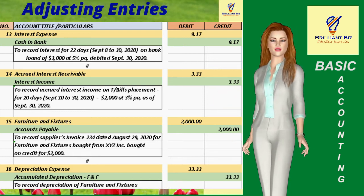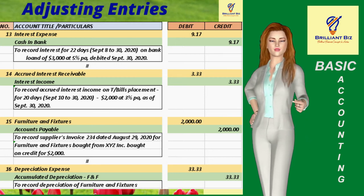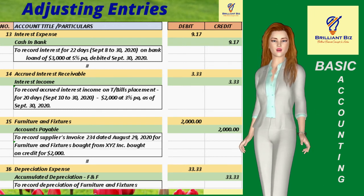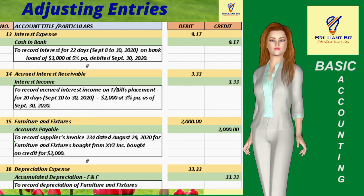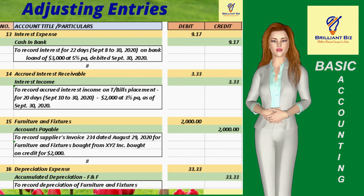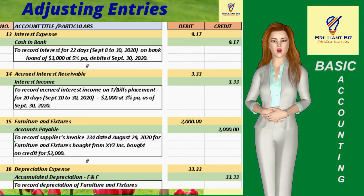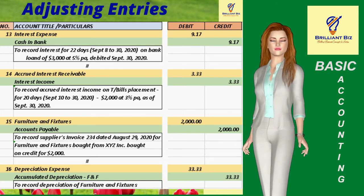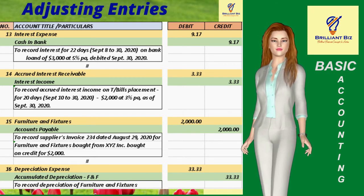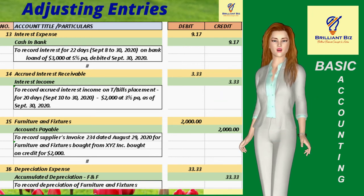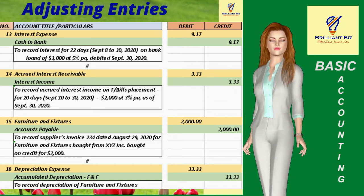Number 12 to record September 30 partial payment of $2,000 bank loan; number 13 to record $9.17 interest on $3,000 bank loan; number 14 to record September 30 deposit of $5,000 by Ms. Smith; number 15 to record XYZ Inc.'s invoice number 234 for furniture and fixtures worth $2,000 bought on credit on August 29, 2020; number 16 to record $33.33 depreciation expense of furniture and fixture for September 2020. All of these adjusting entries will be recorded in the general journal and posted to the general ledger of each of the accounts.